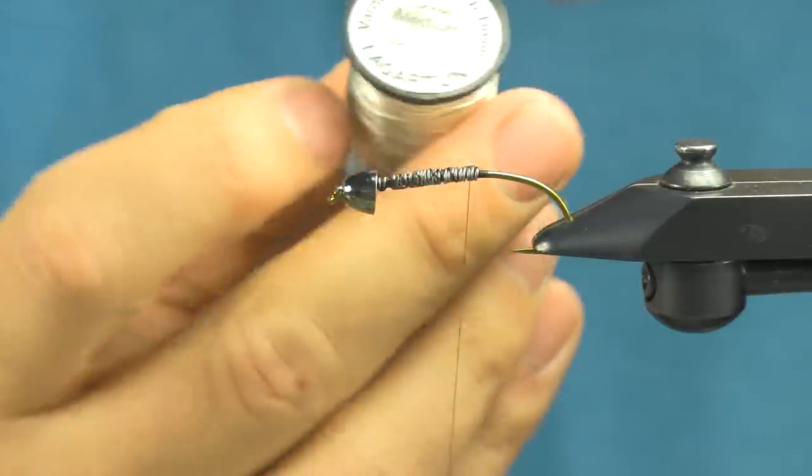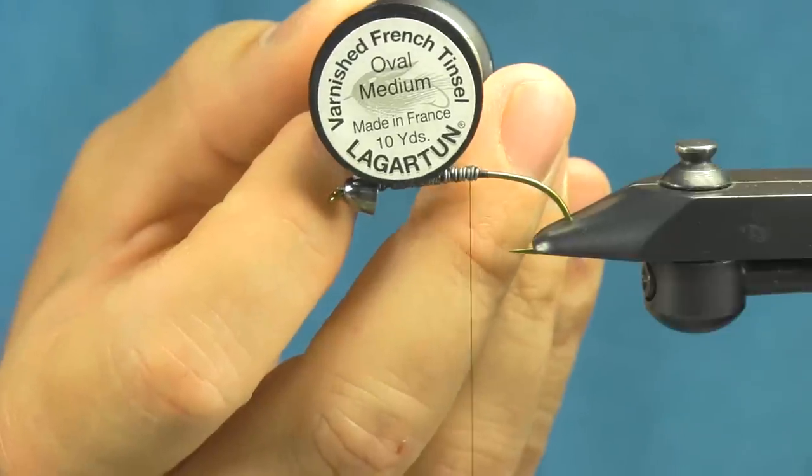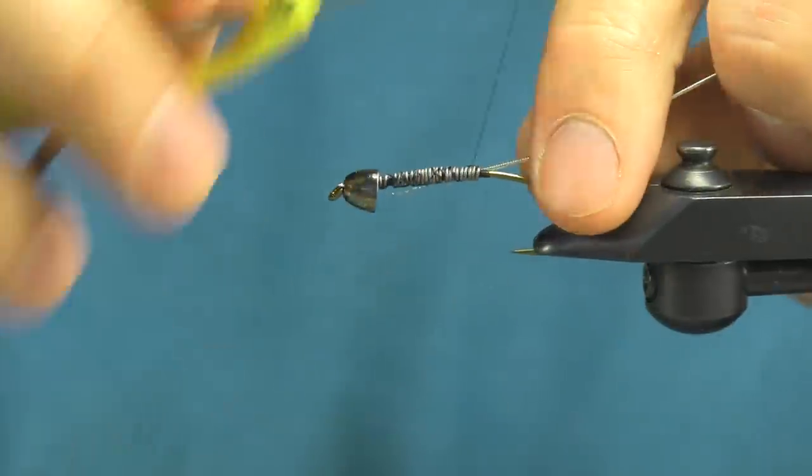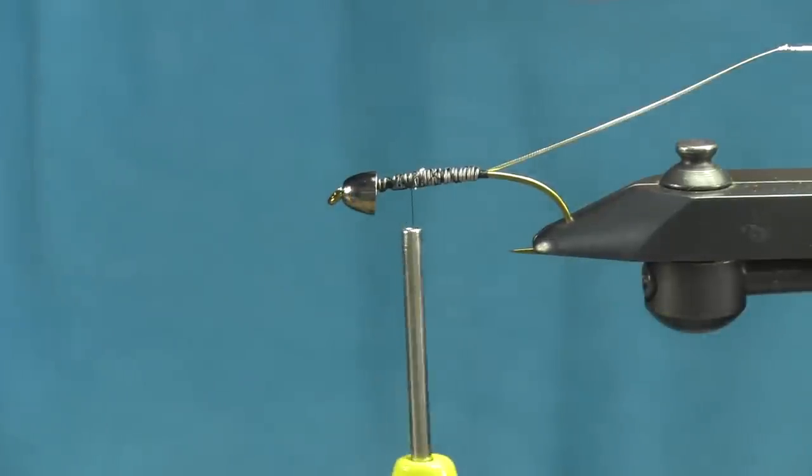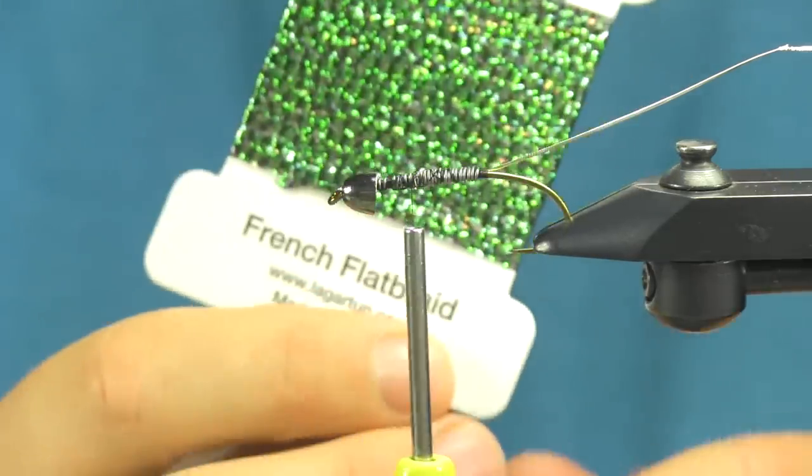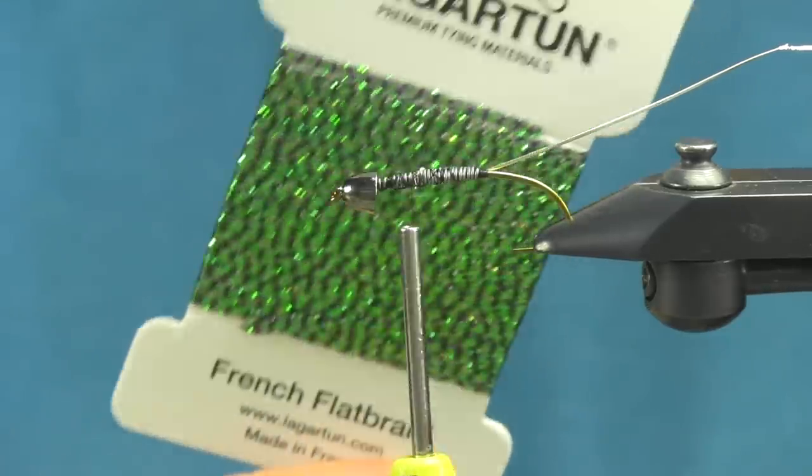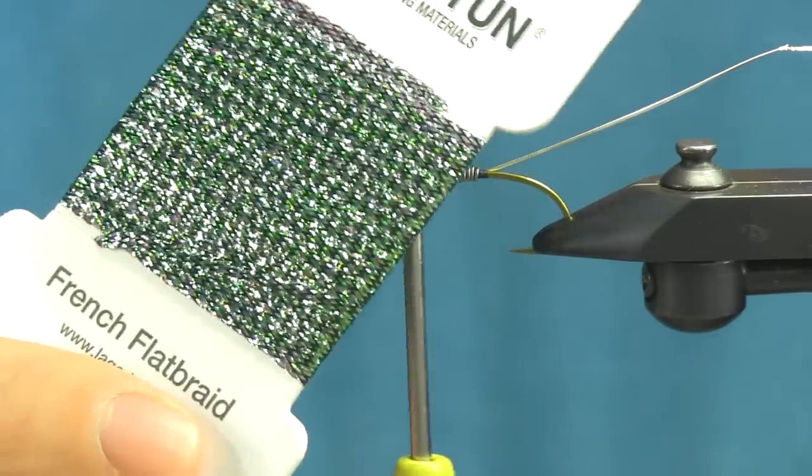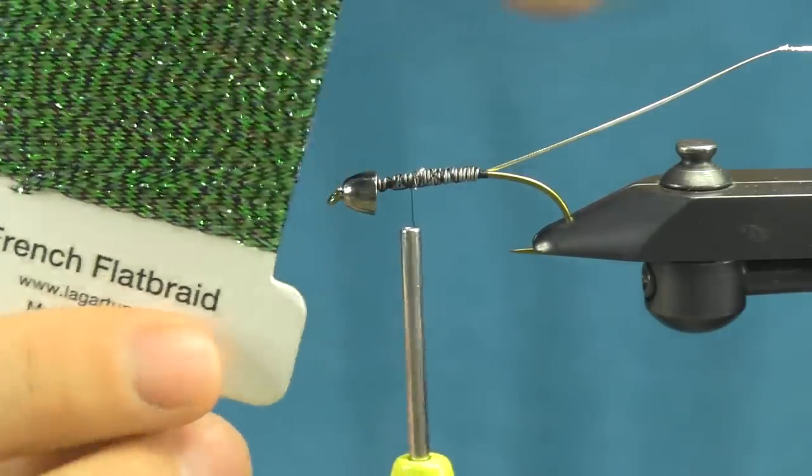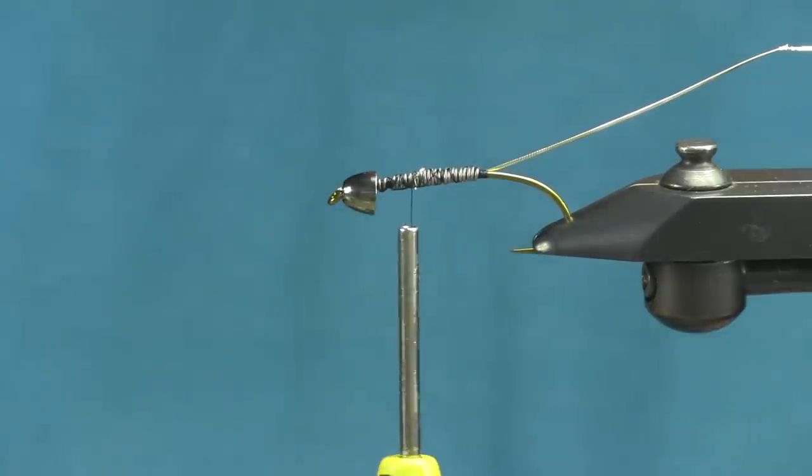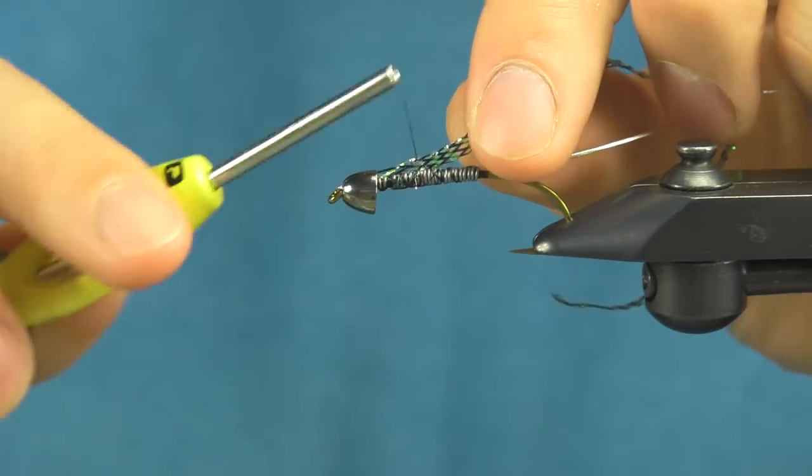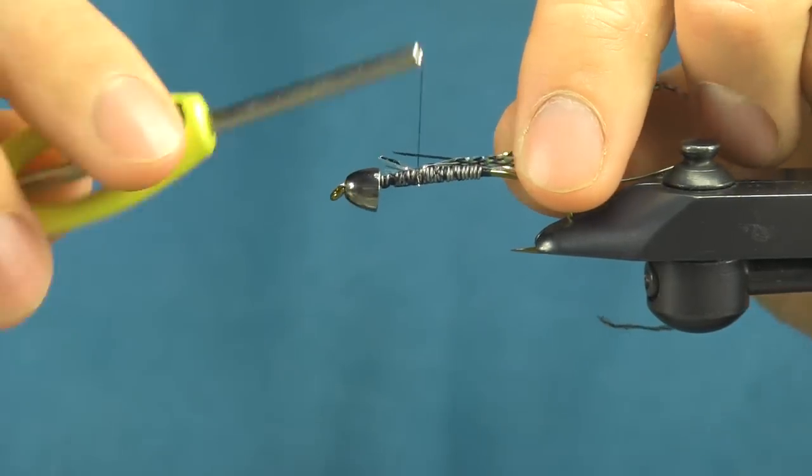Now I'm going to put on my rib. This is a Lagartun oval medium in silver. And then for the body on this fly, I'm going to use the Lagartun French flat braid. This is a really cool color because it's got some iridescence to it. It's a mix of kind of like a pearl, a green, a black all in there. It really has a nice look in the water. It has a little bit of flash so you don't actually need to tie flash on the fly.